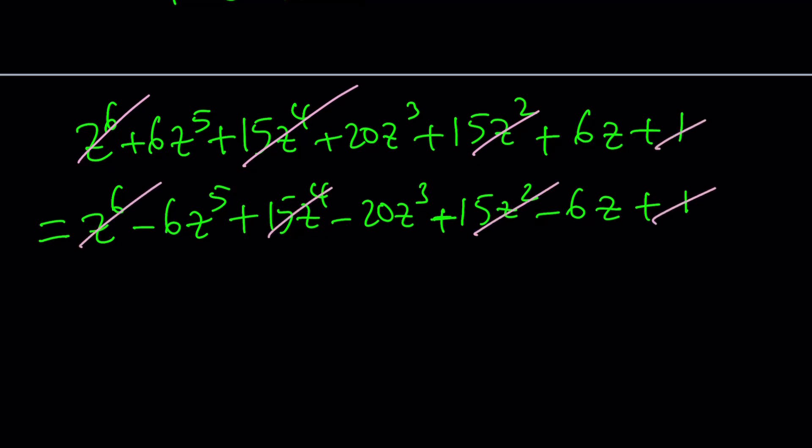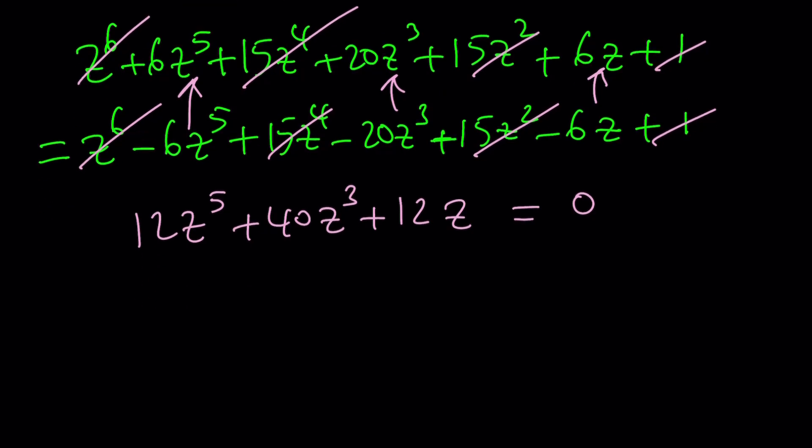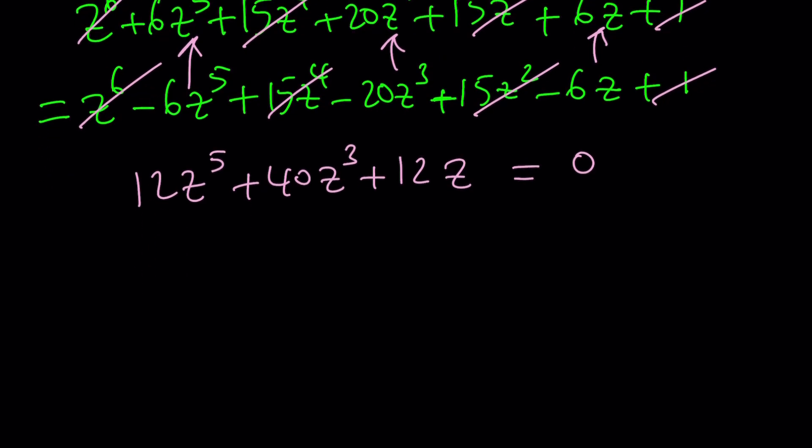These two things are equal they're kind of gigantic but notice that a lot of things are going to cancel out. The even powers Z to the sixth Z to the fourth Z squared and one will cancel. This will just be doubled. So we're going to get 12Z to the fifth plus 40Z to the third plus 12Z equals zero. This is nice because we can divide everything by 4. 3Z to the fifth plus 10Z cubed plus 3Z equals zero.